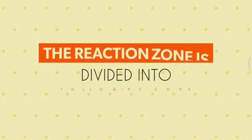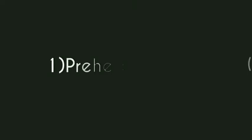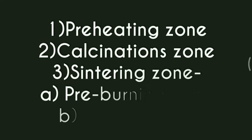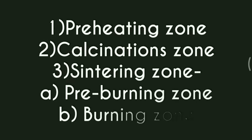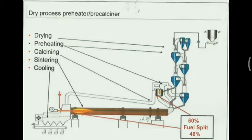The reaction zones are divided into the following zones: first, preheating zone, calcination zone, sintering zone — shown here — pre-burning zone, and burning zone. This process is shown here.